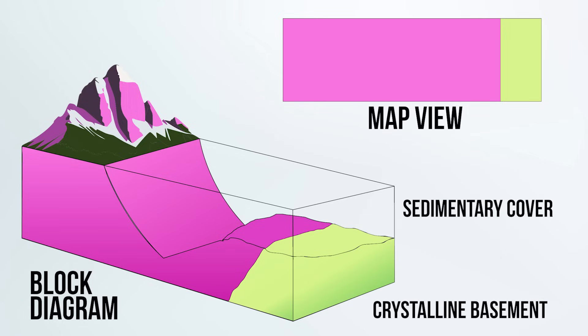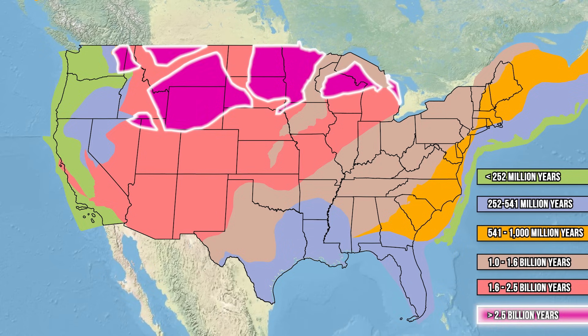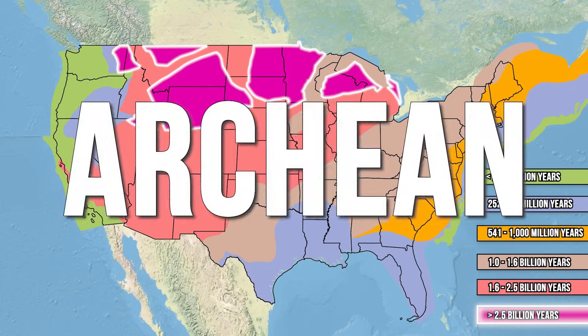This is the kind of map we want to use to locate the oldest rocks. On this map of the 48 conterminous states, the areas of oldest rocks are shown in dark pink. These areas have basement rocks older than 2.5 billion years, a time period called the Archean.